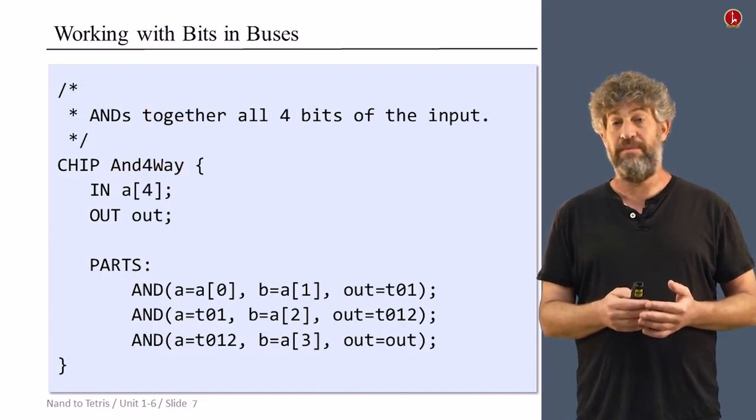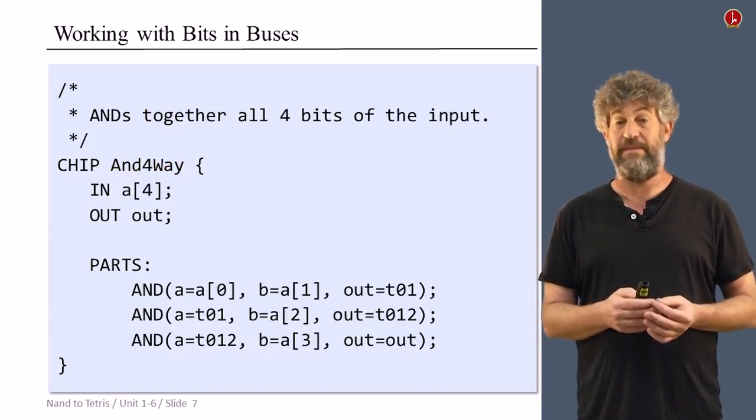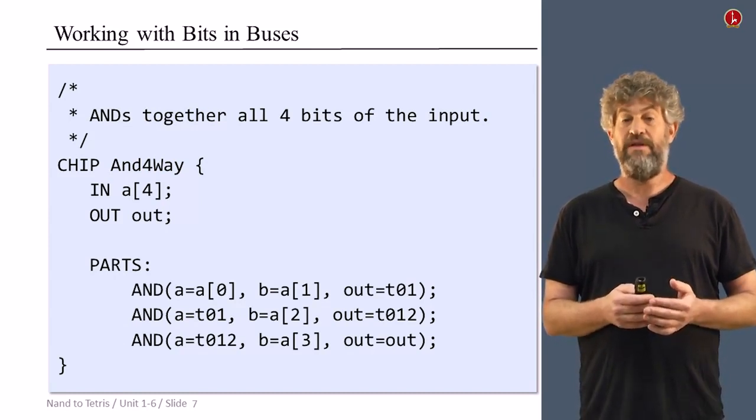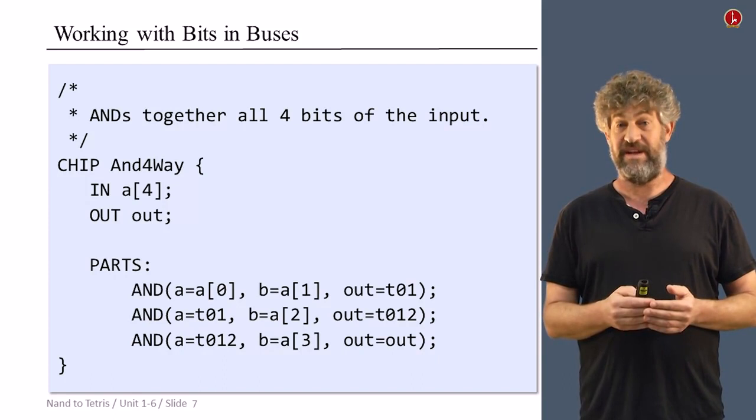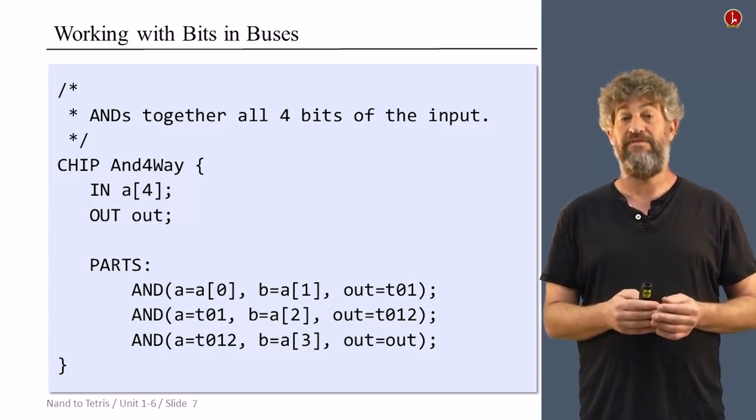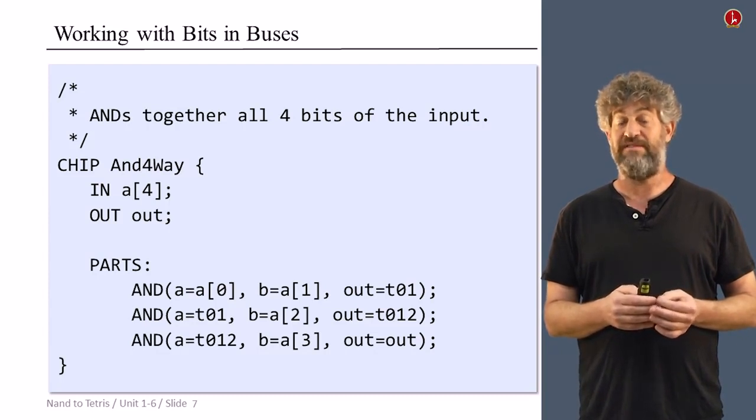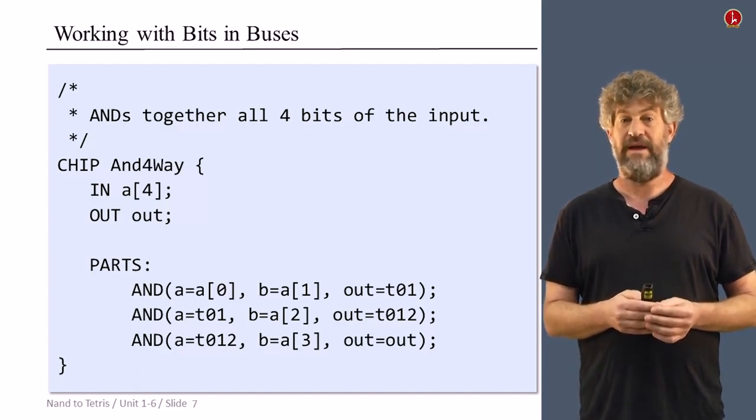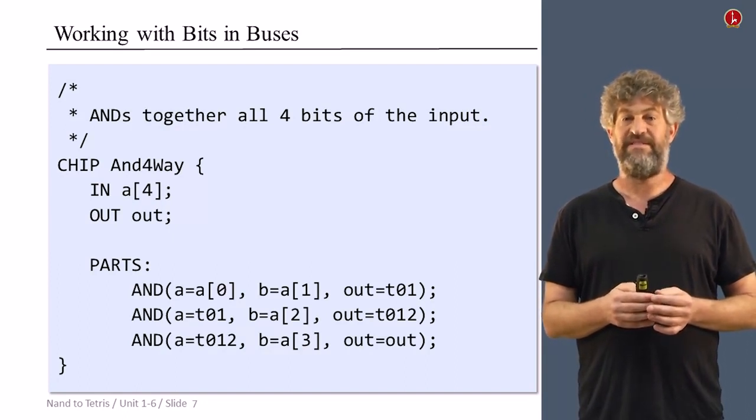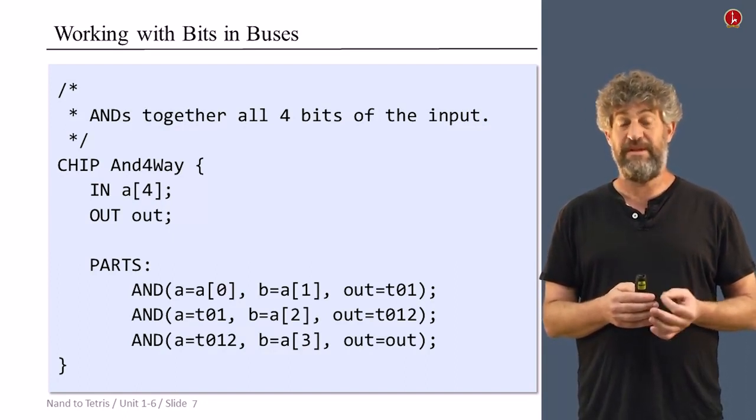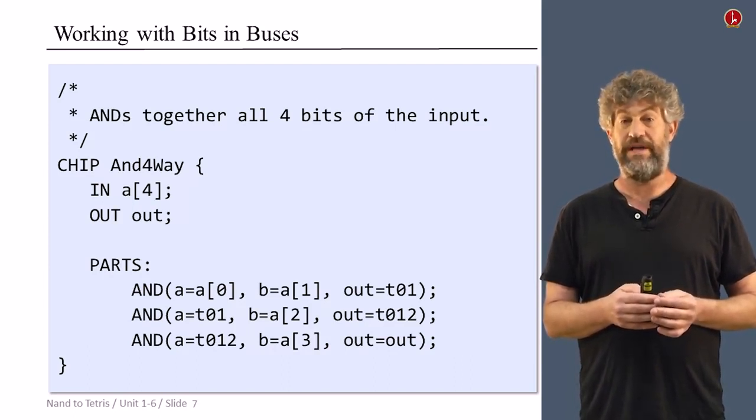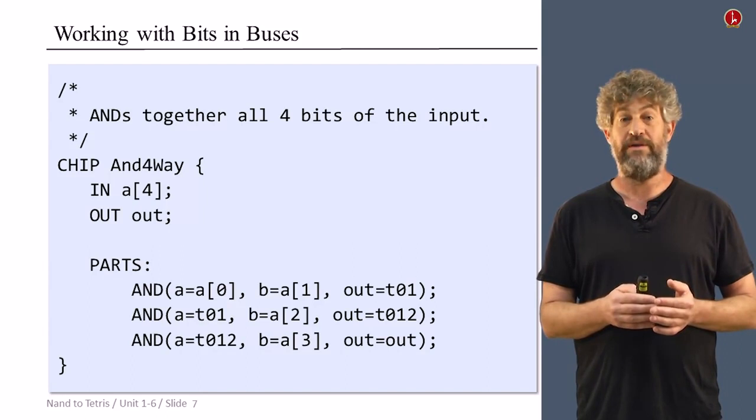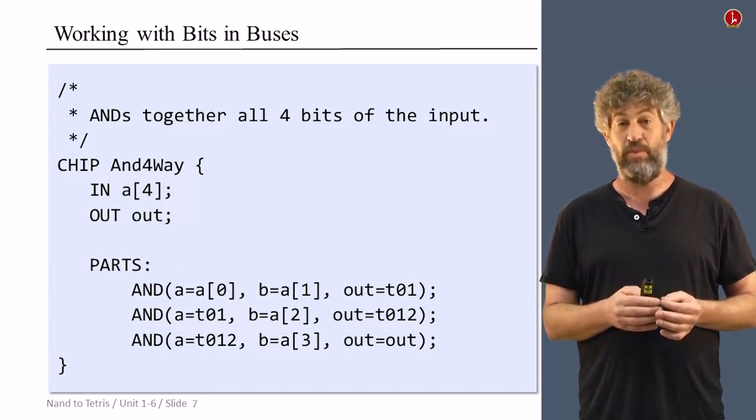Now, of course, we should also be able to actually manipulate and get access to separate bits in a bus, because at the end of the day, a bus is just a bunch of bits together. Here's an example. Suppose we want to have a chip that gets as an input a bus of four bits in this case, and outputs a single bit which is the AND of all the bits in the bus. How do we do that? To do that, we will need to access bit after bit and then simply AND them one after another. And this is how we do that, and notice the syntax. When we put an index beside the name of a pin of a bus, we just mean the specific bit that we're talking about. We're using the convention in our HDL that is common to most programming languages nowadays, that a four-bit bus has bits numbered zero, one, two, and three. So the indices go from zero to the bus width minus one.